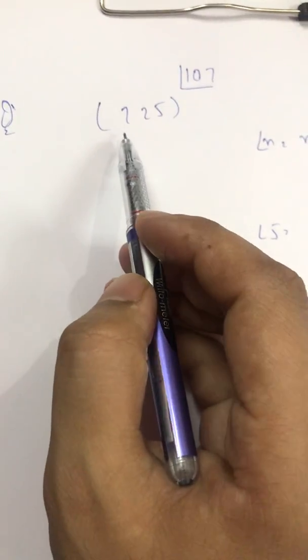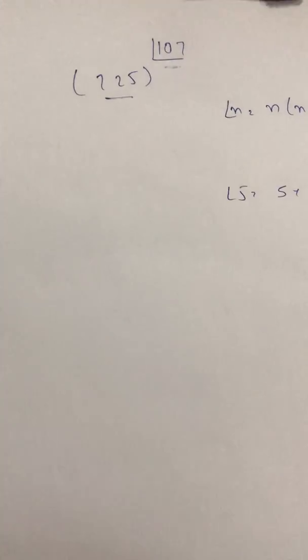Now, they asked me to find the unit digit of 725 raised to power 107 factorial. That seems to be quite difficult or quite hard to give the answer for this, but in actual it is very much easy.